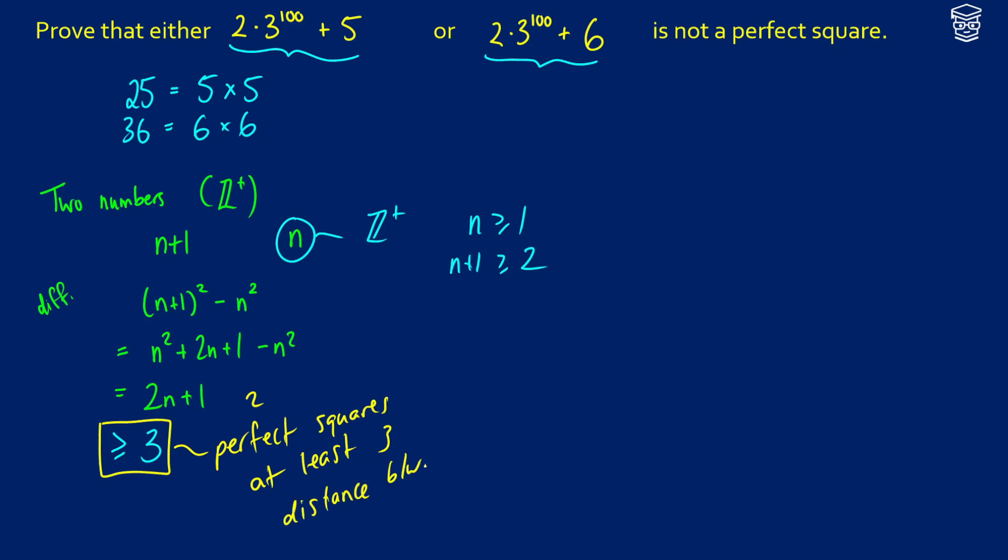So if we have two perfect squares, let's pick two, like 4 and 1. We see the difference is at least 3. Or let's say we pick 9 and 4, the difference is at least 5. So the difference between these perfect squares is always going to be greater than 3.